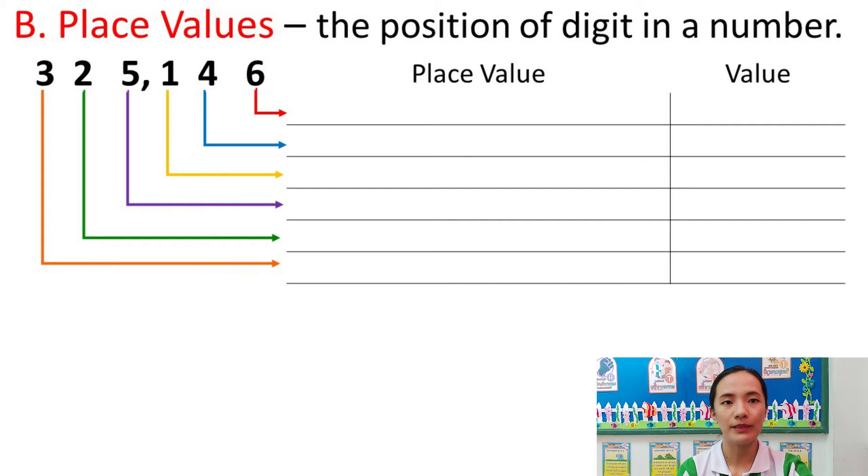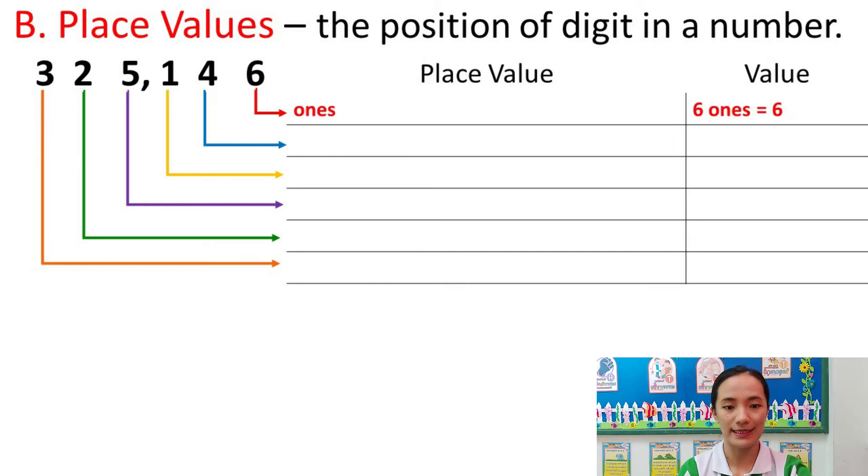For example, we have the number here, 325,146. Now let's learn about the place value and the value of each number. First, number 6. Number 6 is the last number. Its place value is ones and its value is 6. Next, 4. The place value is tens and the value is 40.